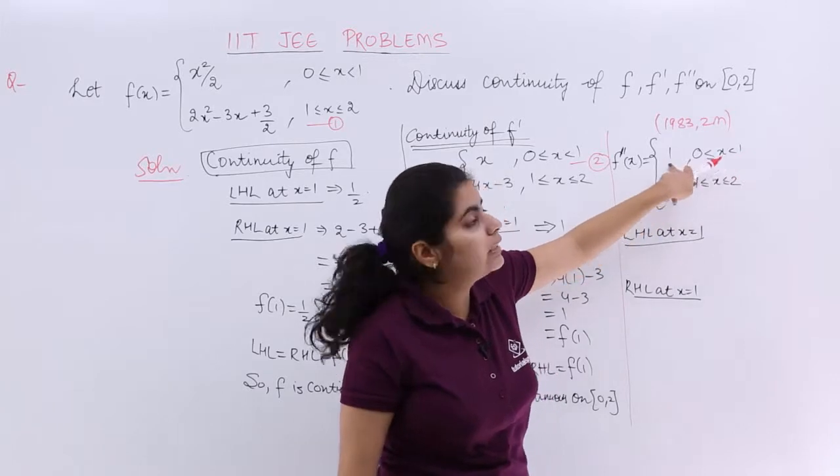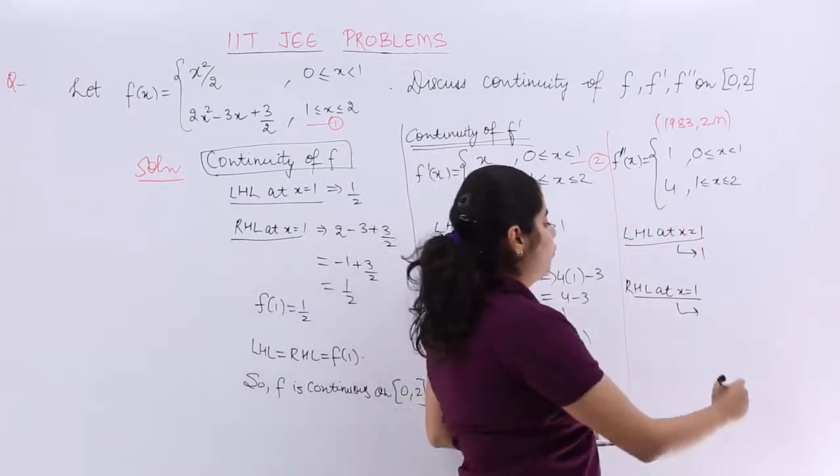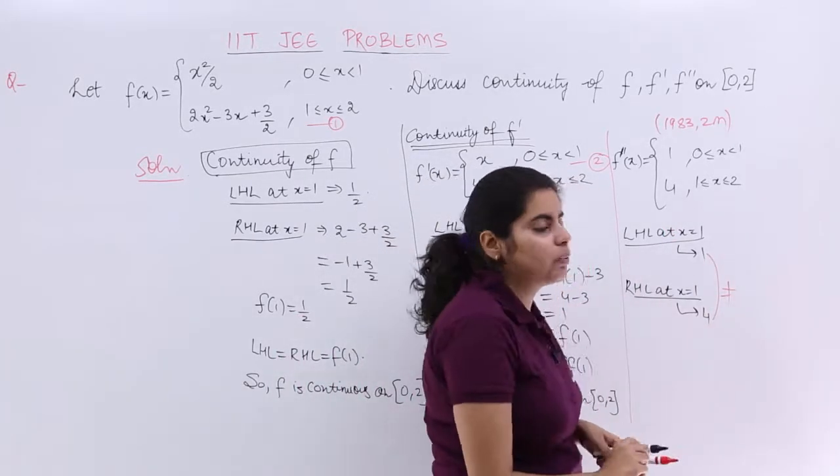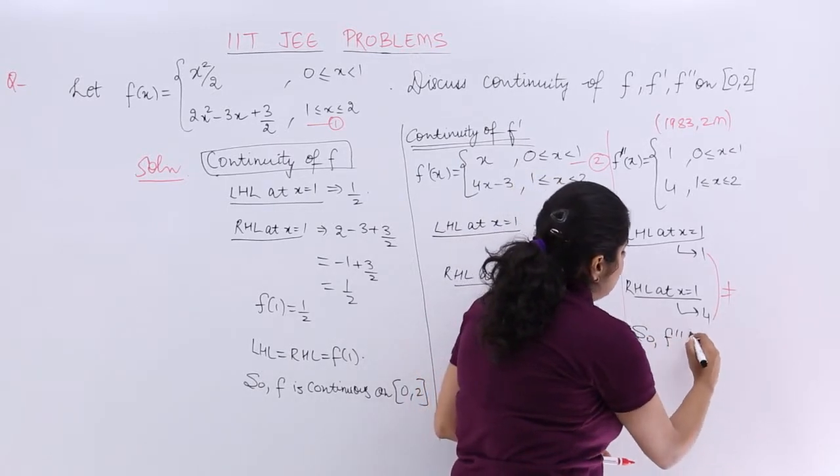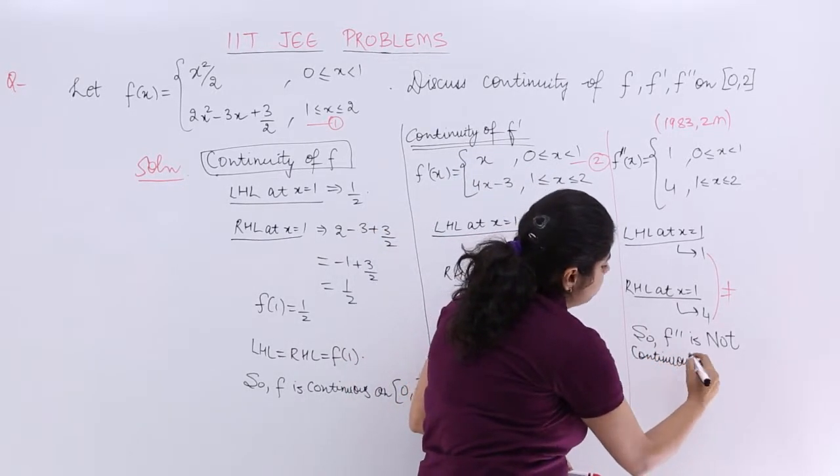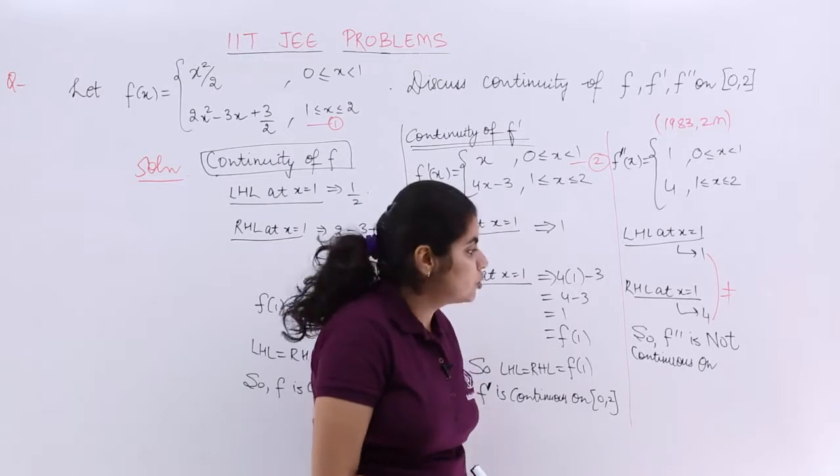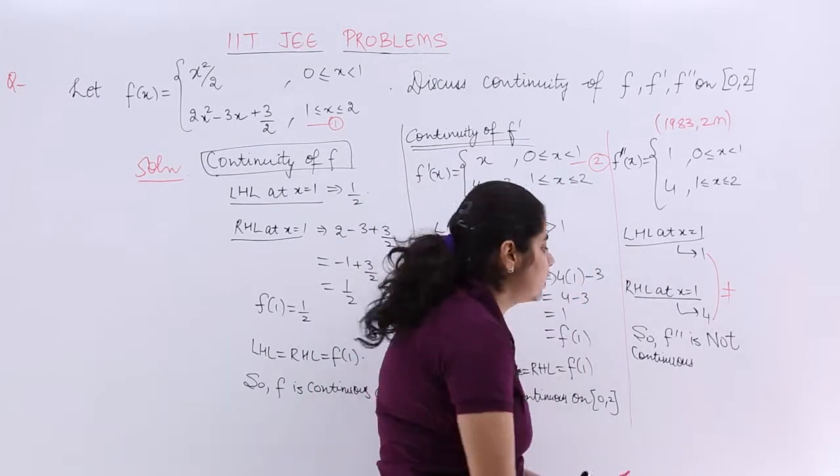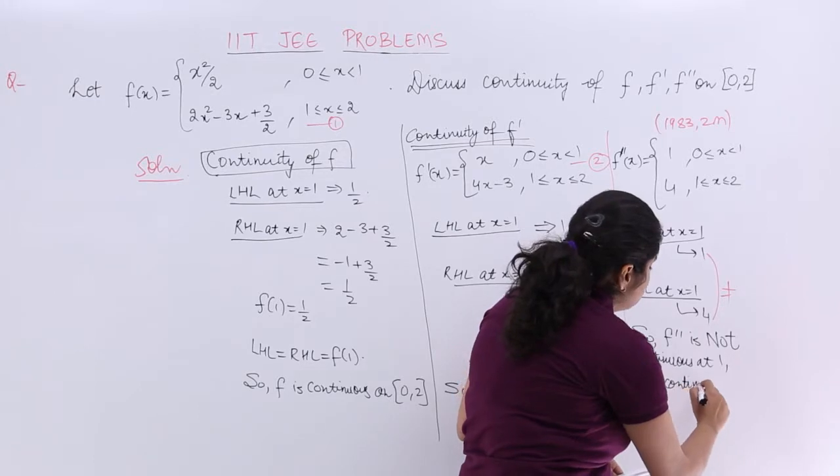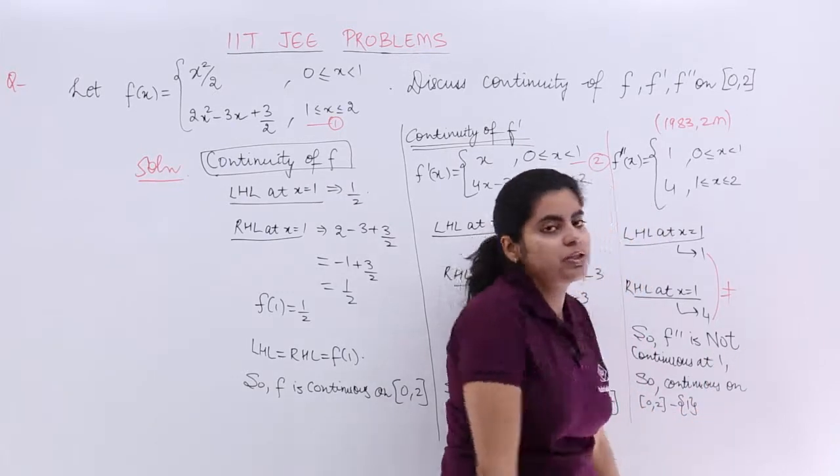At x equals 1 the left hand limit gives me 1. At RHL x greater than or equal to 1 it gives me 4. So is LHL equal to RHL this time? No, because 1 and 4 are not equal. So I say that my f'' is not continuous on whole of [0,2]. Actually it is not continuous at 1. So it is continuous where? So it is continuous on [0,2], 1 excluded.